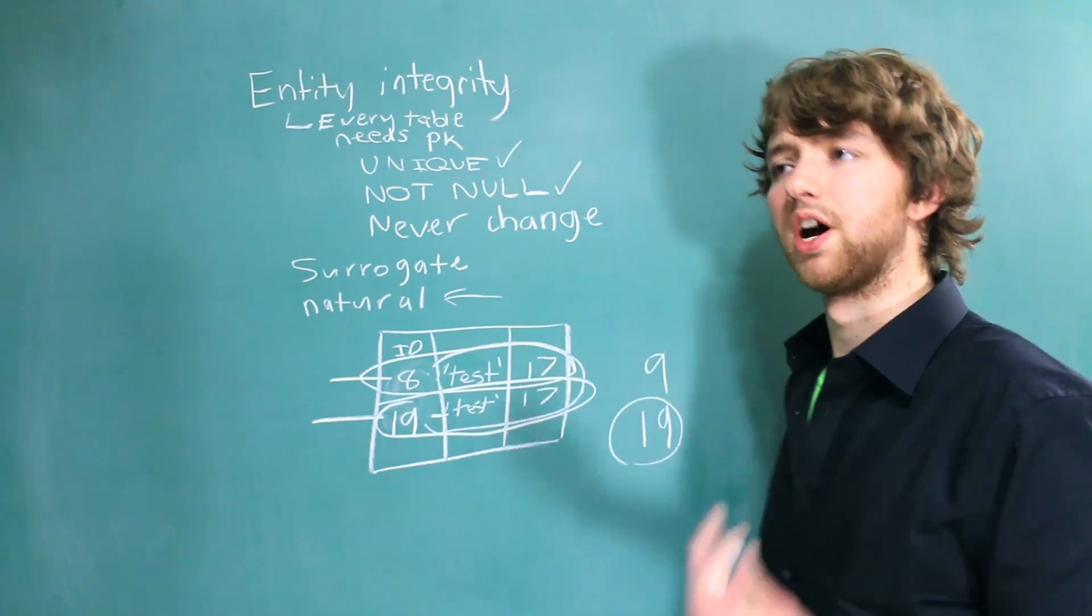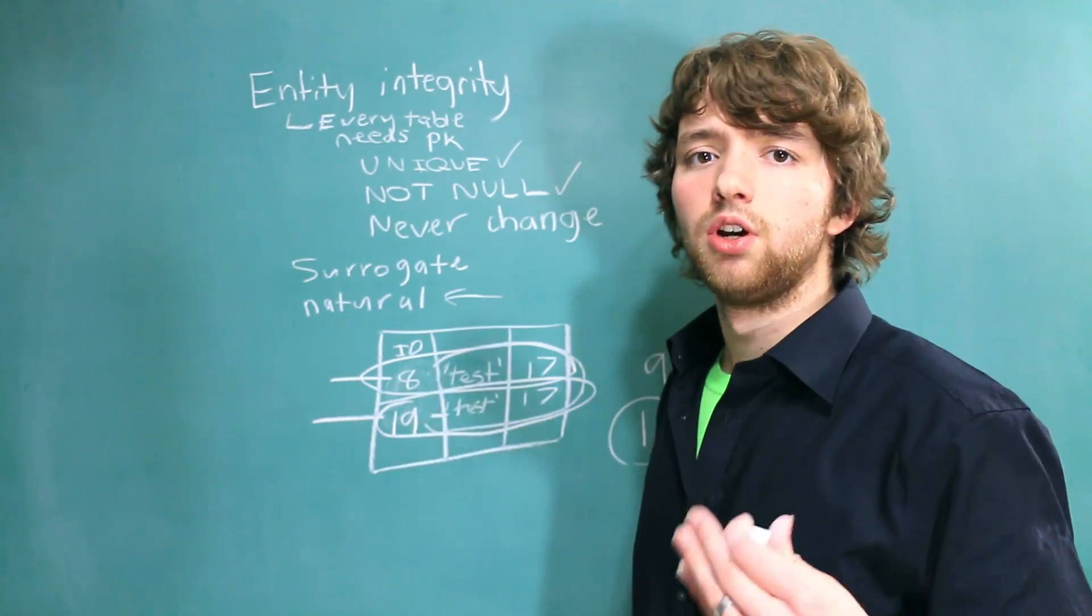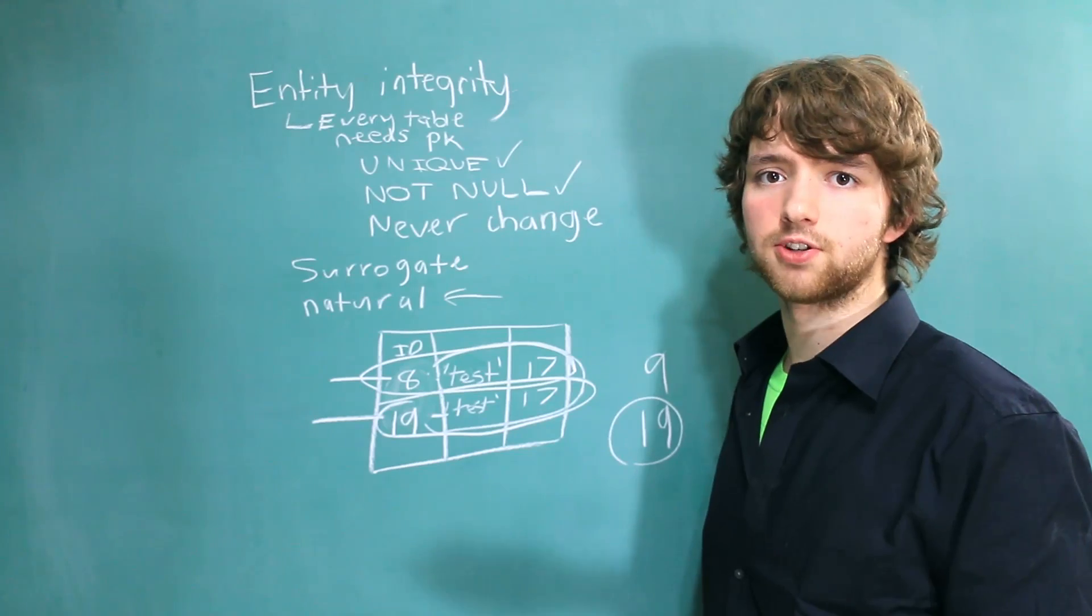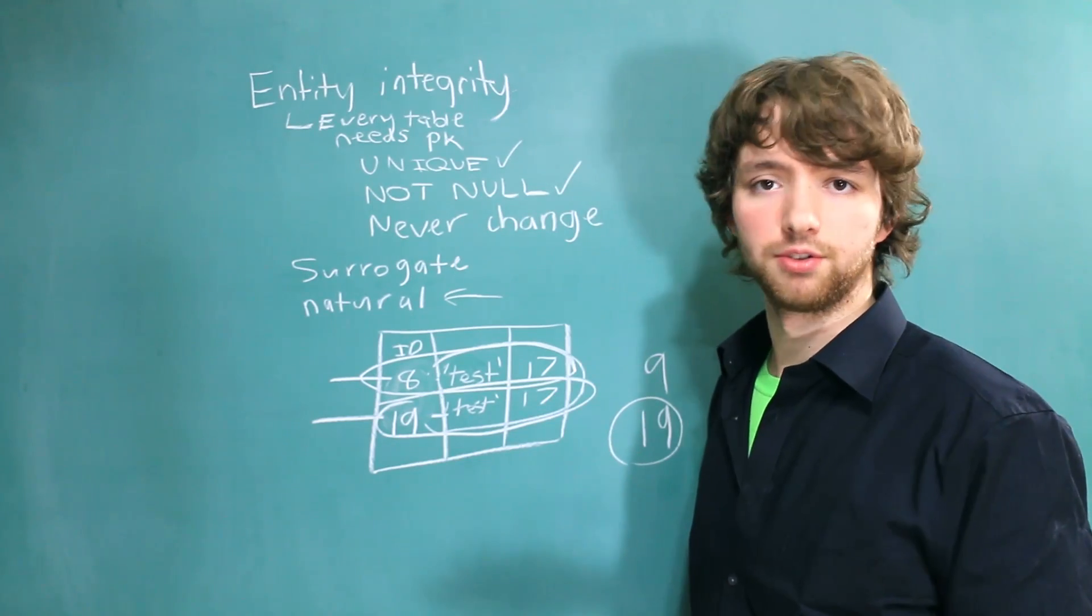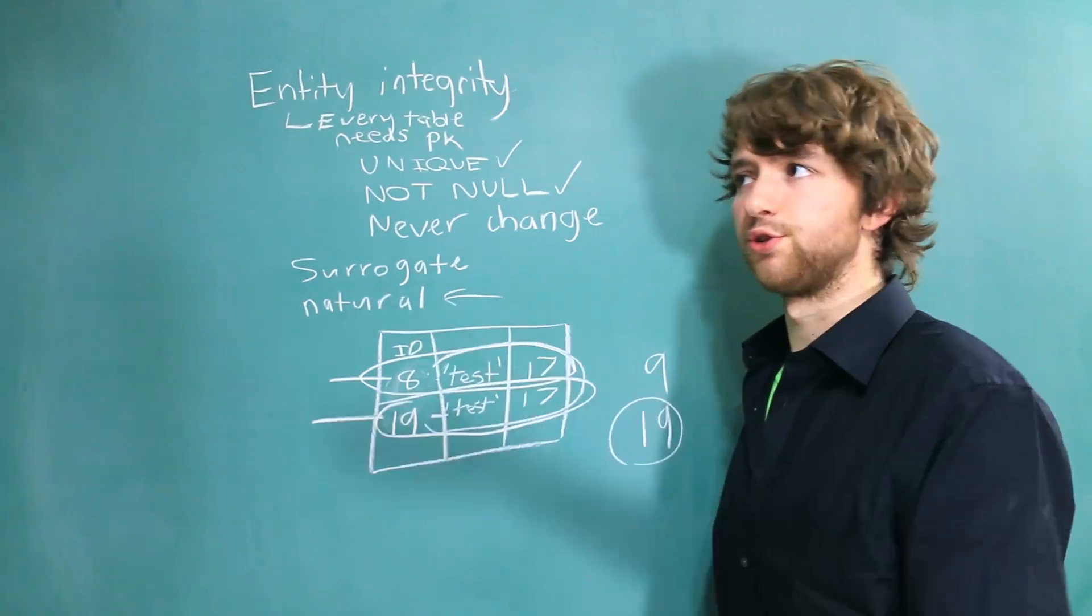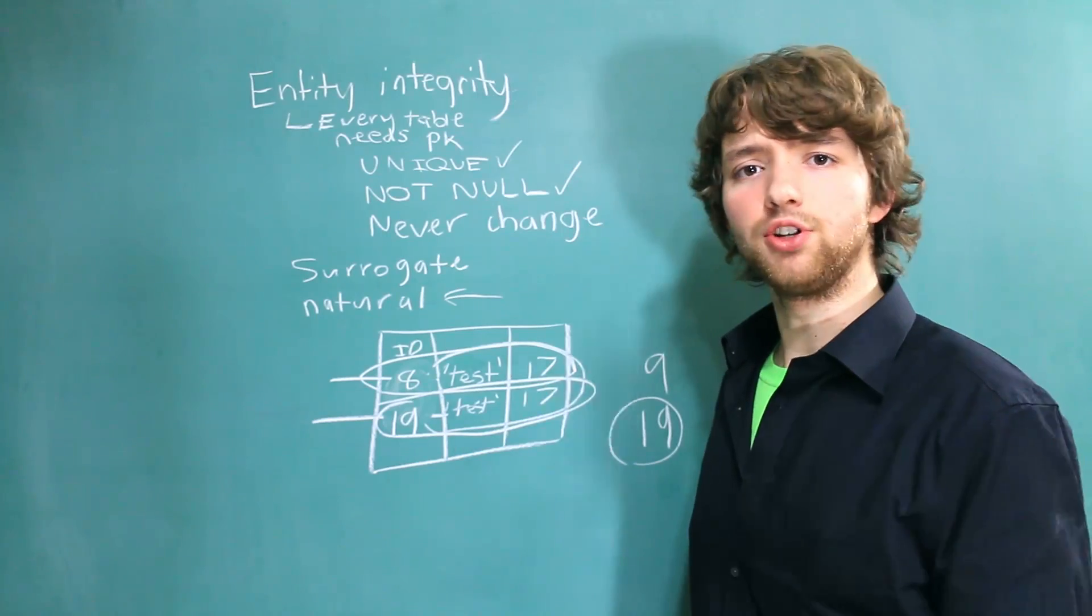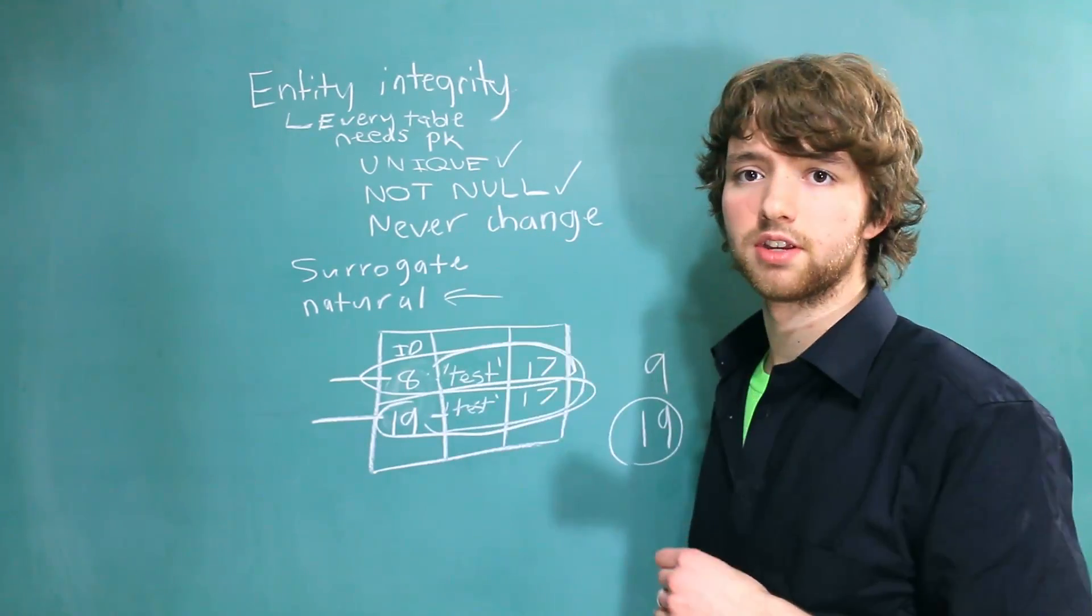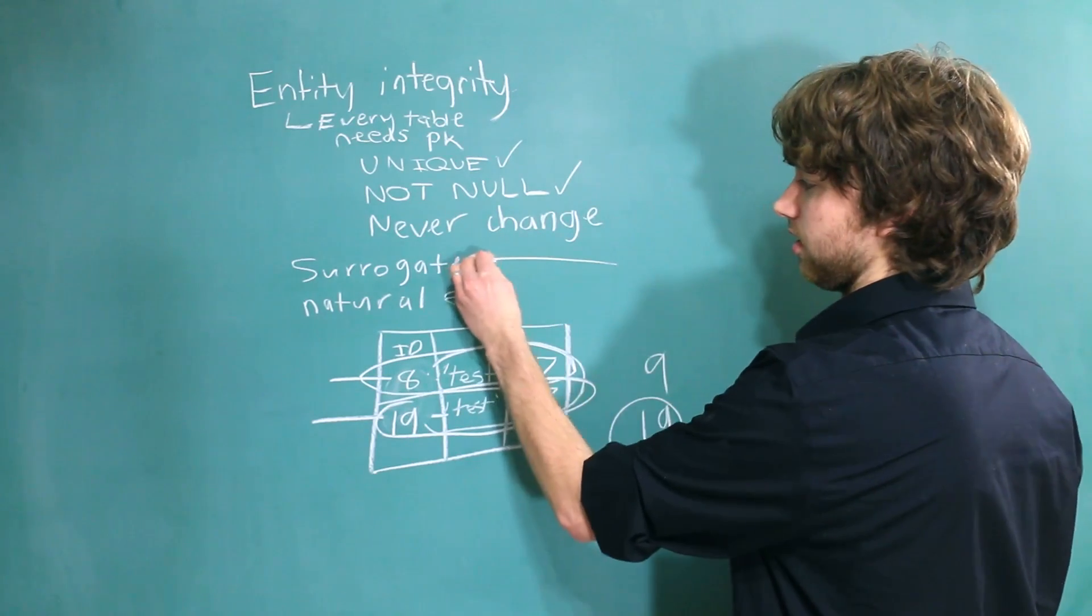So you'd have to restrict people to not being able to update their email. Well a username might work because in that situation it's not going to change. You can restrict people from updating their username. That's just for a user table example, but you're going to have those kind of problems with any table that you use natural keys. Because of that, I think more people are starting to use surrogate keys.